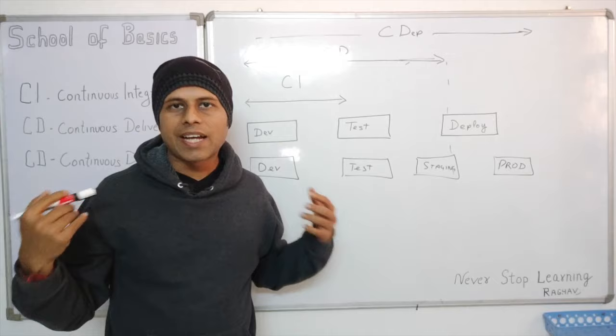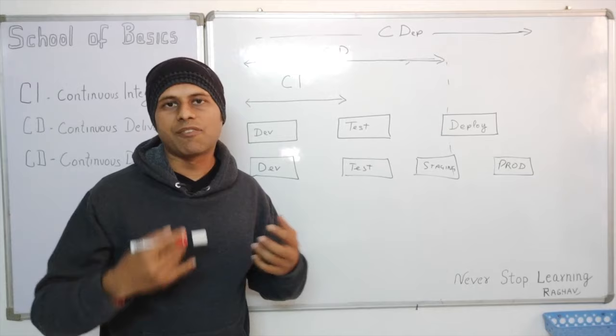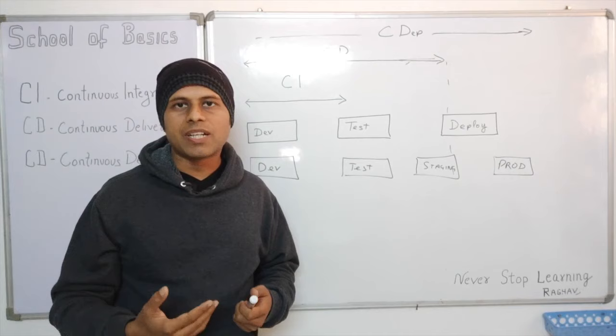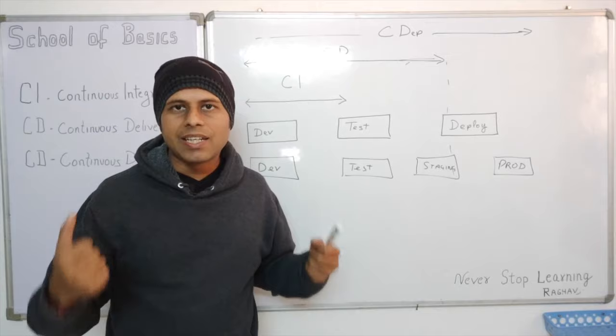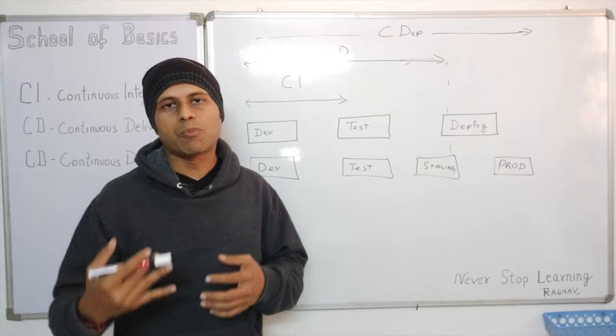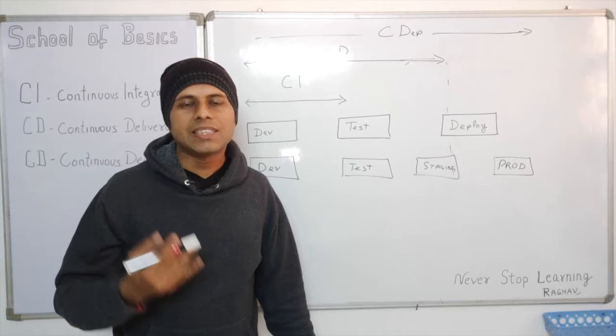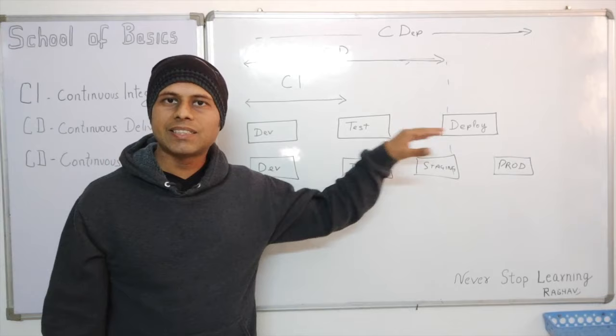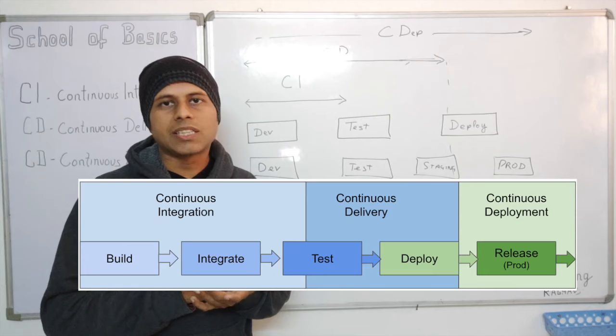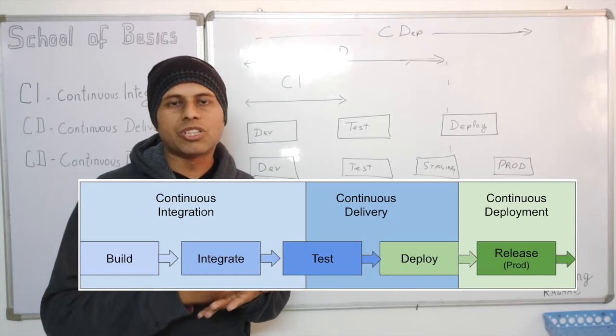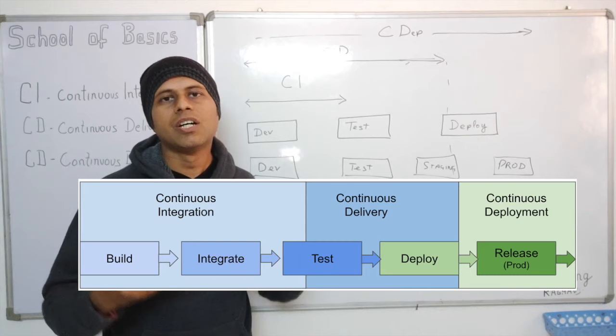When we integrate everything together — development, operations, all processes automated and linked — we call this complete process DevOps. Regarding the CI/CD pipeline: all these processes of CI and CD are integrated with each other with automated triggers. When the first process completes and passes, it triggers the second process; if that passes, it triggers the third, and so on. When we chain all these processes with automated triggers, we call it a CI/CD pipeline.